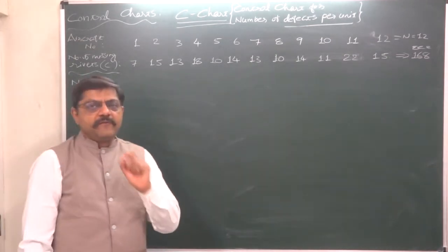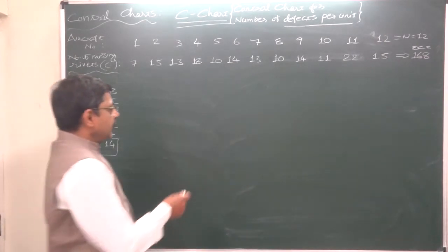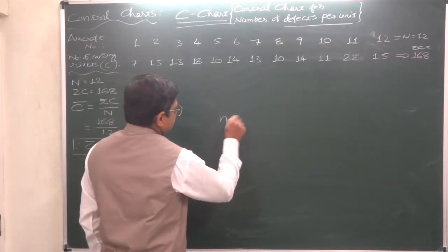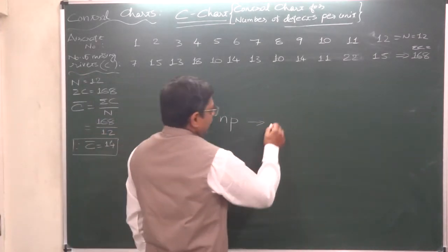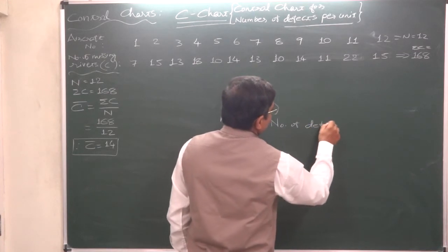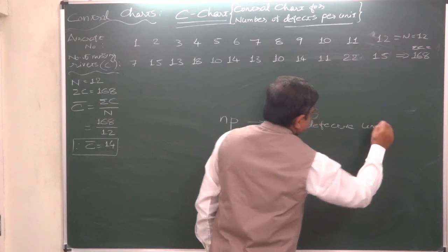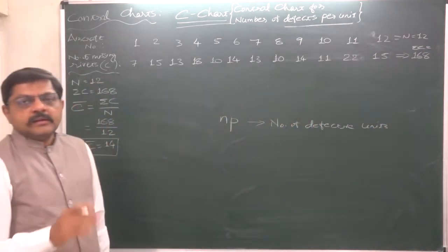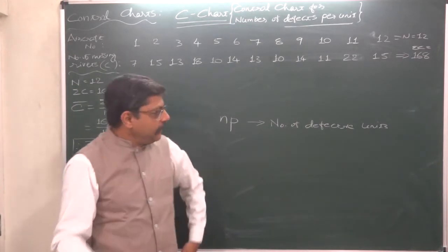Remember in the last lecture we studied a control chart named NP chart. What was the meaning of NP? Number of defective units. That means we just need to count the number of units with a predefined defect in a sample.